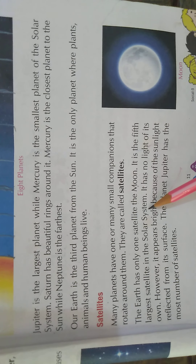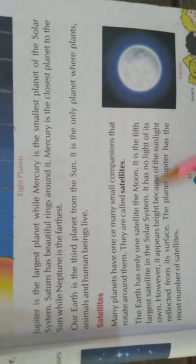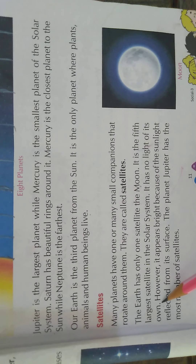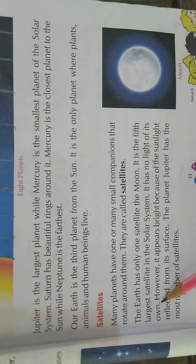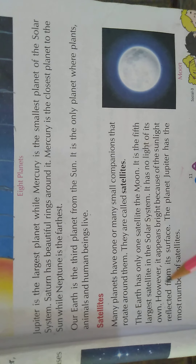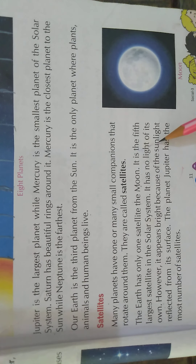The moon has no light of its own. Don't be confused here — the moon has light only because it appears bright due to the sunlight reflected from its surface.